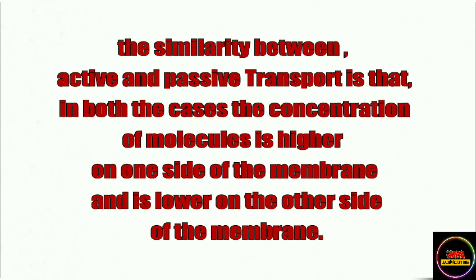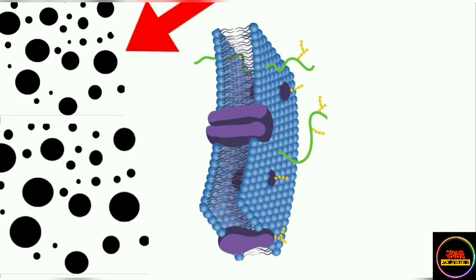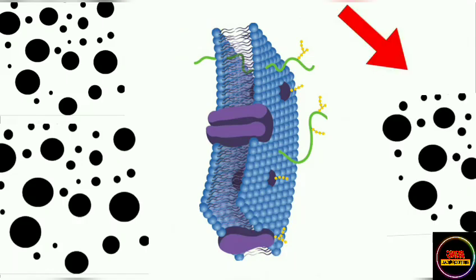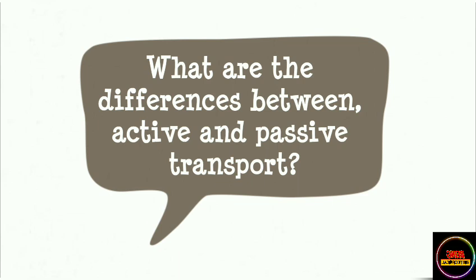If this is the semi-permeable membrane, then one side would have a higher molecular concentration and the other side would have a lower molecular concentration compared to the first side. Now let us look at the differences between active and passive transport.